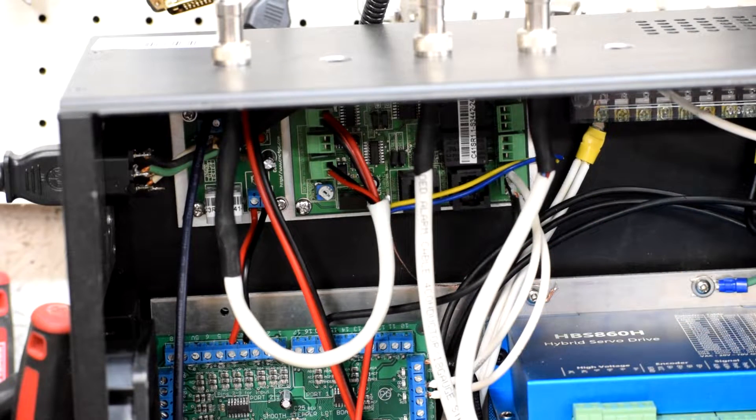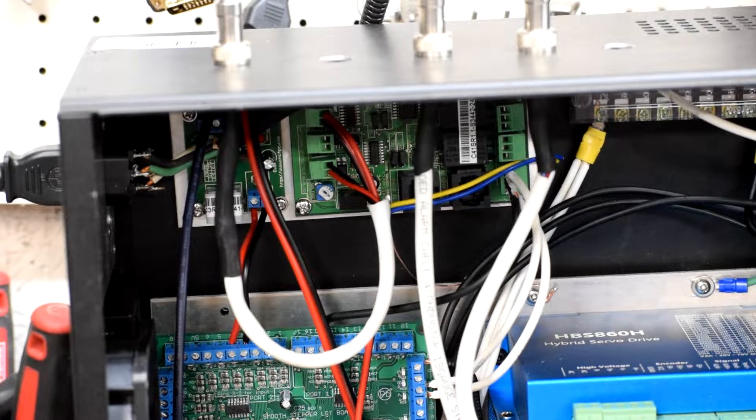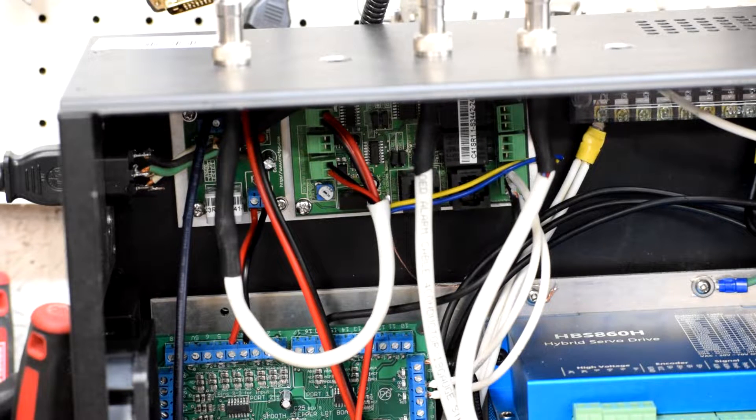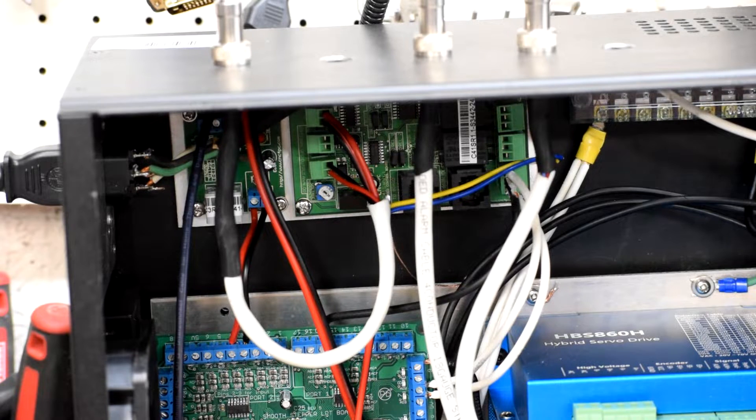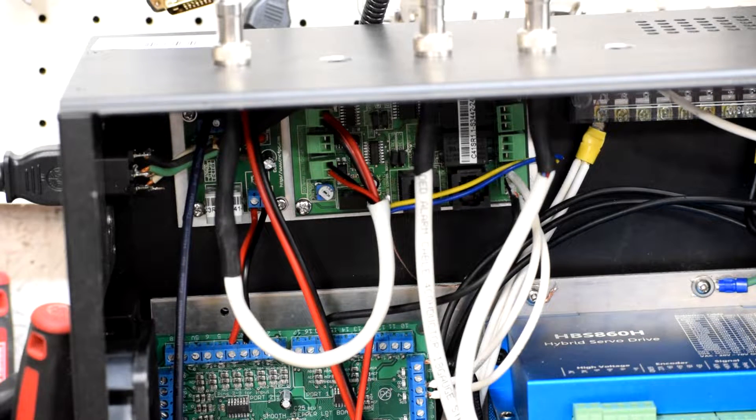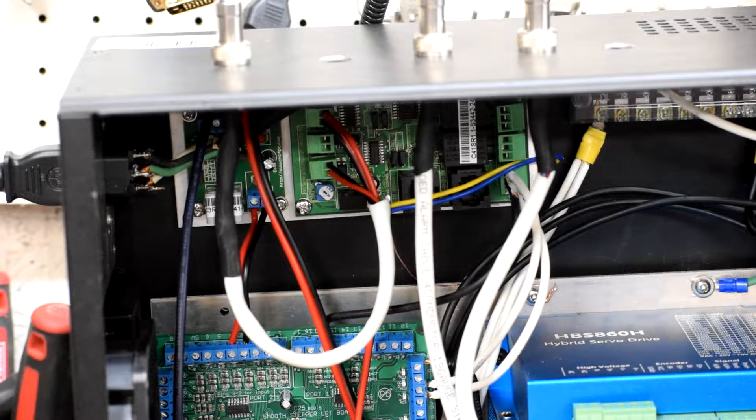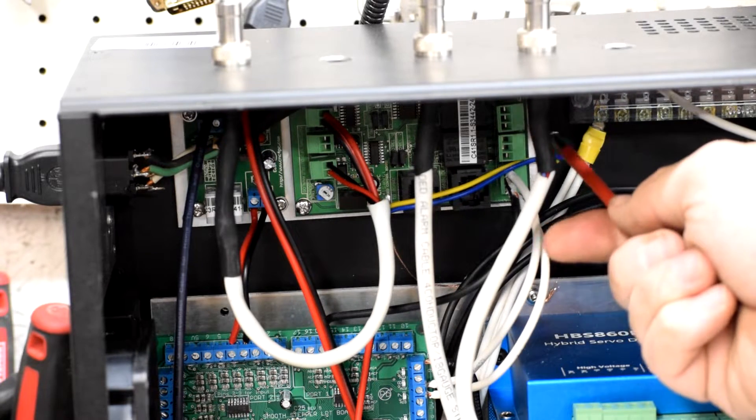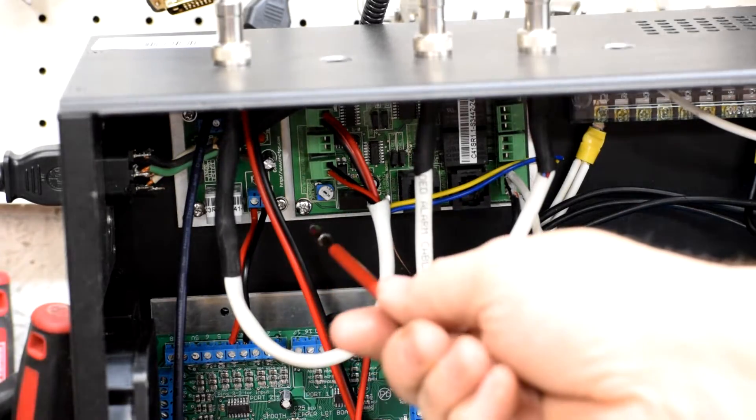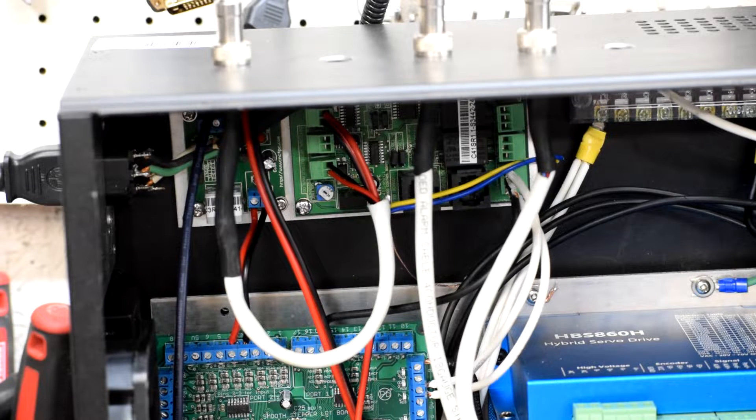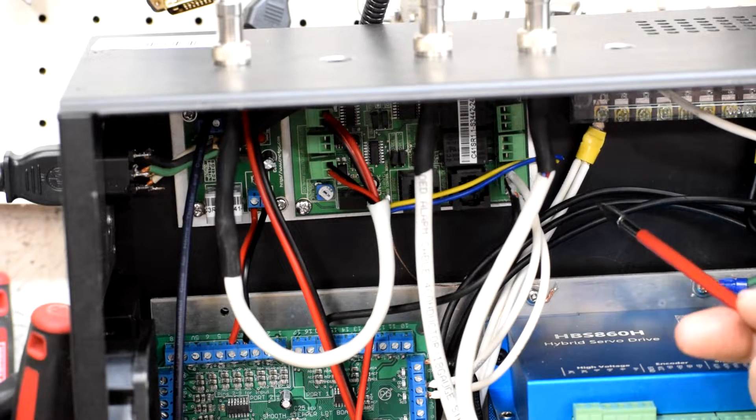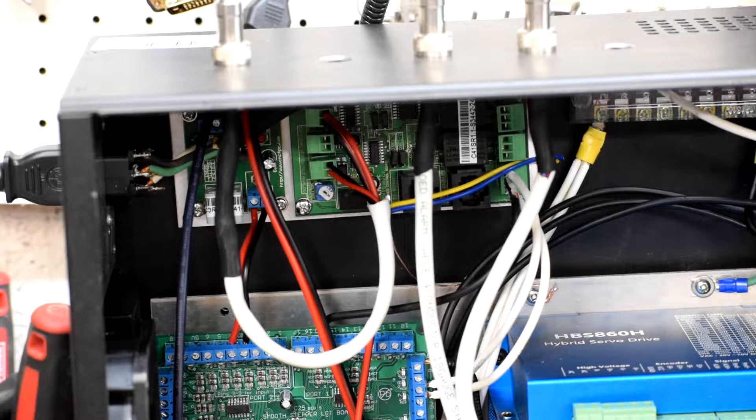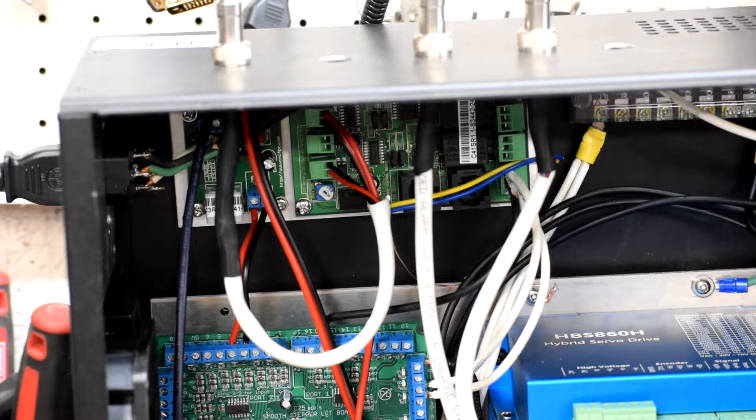So here we can see the third part of the equation, which is the computer spindle motor controller. This part here is a pulse width modulated variable voltage out motor controller. What that means is that it takes in signals here from the ethernet smooth stepper, and the ethernet smooth stepper treats it like a stepper motor. So it just gives a direction, and then it gives a frequency pulse that tells it how fast it's supposed to go, and this board converts that frequency pulse into a variable voltage that comes out of this line here, which goes out to the motor controller.